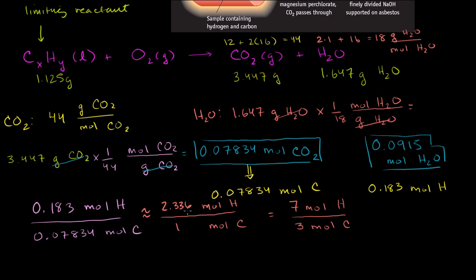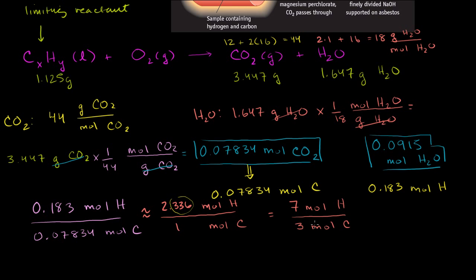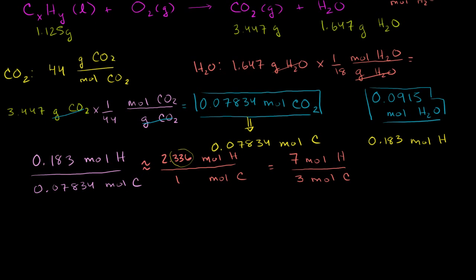Multiplying by 3: 3 × 2 is 6, and 3 × one-third is 1 more, giving us 7 moles of hydrogen for every 3 moles of carbon. We can verify: 2.336 × 3 is very close to 7. So 7 moles of hydrogen for every 3 moles of carbon gives us our empirical formula: C₃H₇.